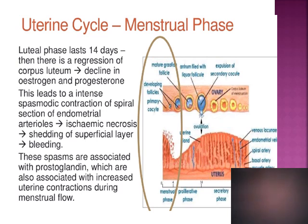With the regression of the corpus luteum, the secretion of estrogen and progesterone declines. Due to the low levels of progesterone and estrogen, there is intense spasmodic contraction of the spiral arterioles of the endometrium, resulting in ischemic necrosis and further shedding of the superficial layer of the endometrium, which results in bleeding. These spasms are associated with prostaglandins, which are also associated with increased uterine contractions during menstrual flow and are associated with dysmenorrhea.